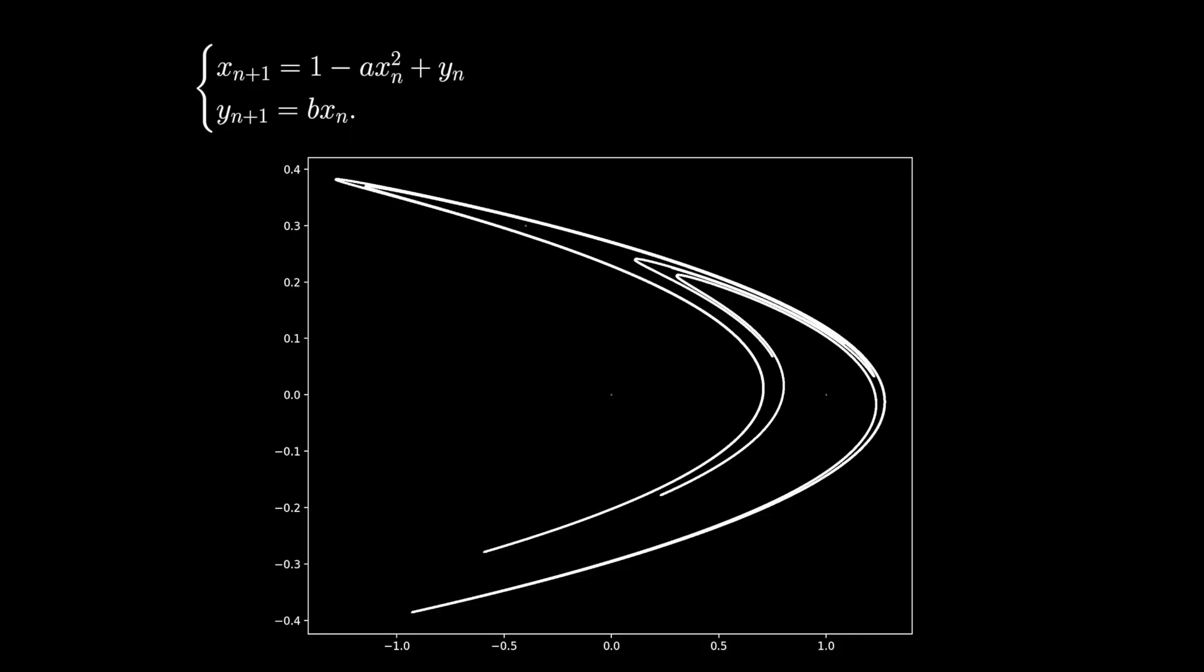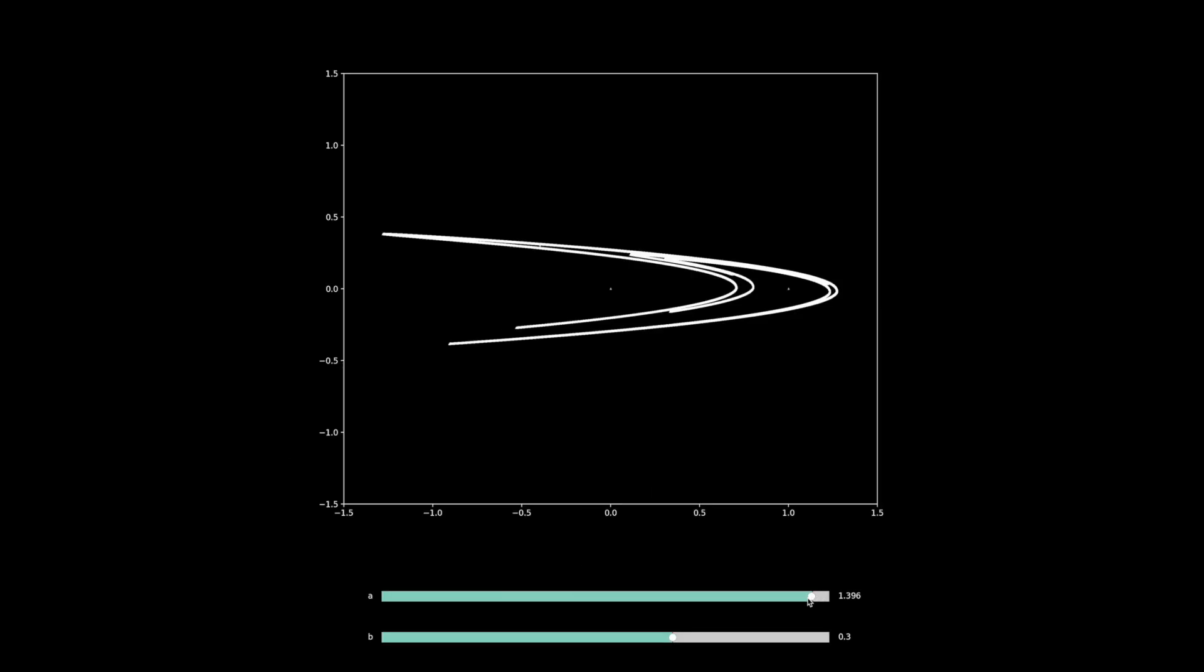But the strange attractor and bifurcation maps are not all that the Hénon map has in store for us. If we explore values of A and B completely outside of the classic map range, we find some other interesting behaviors, including some of the values that converge.